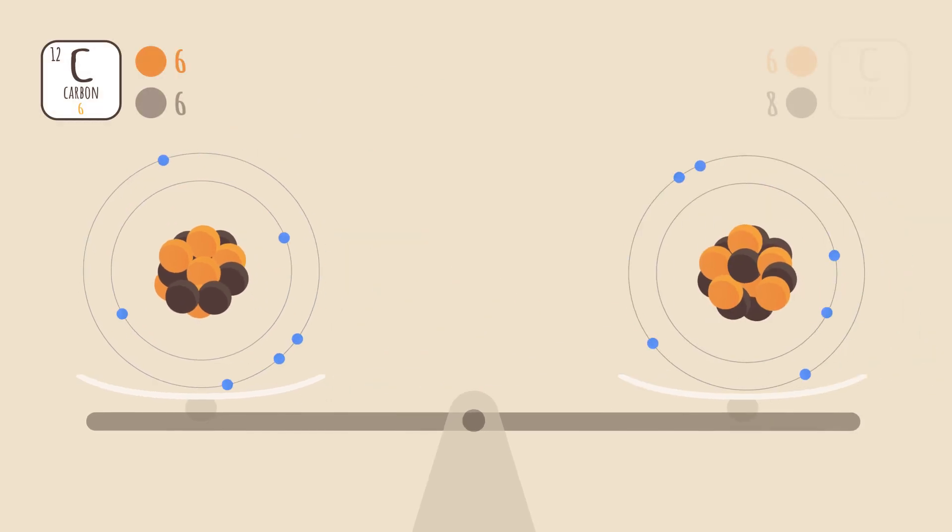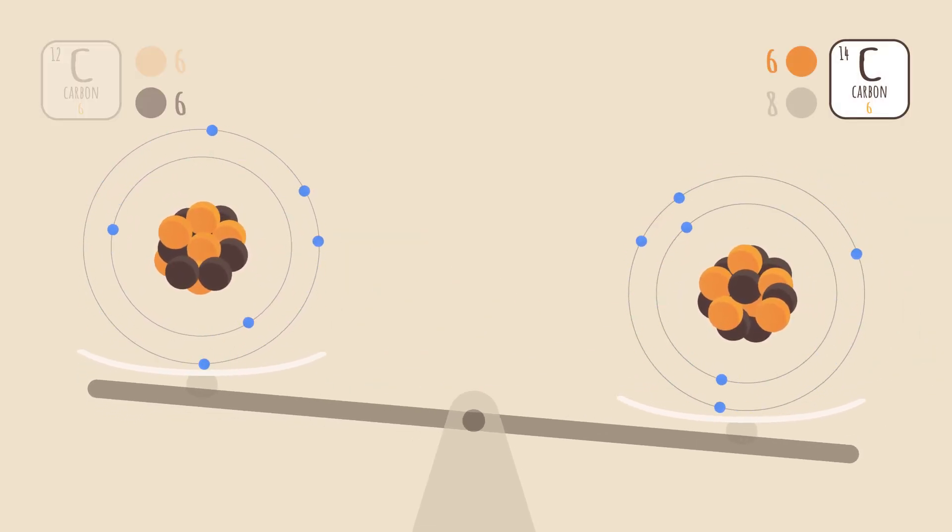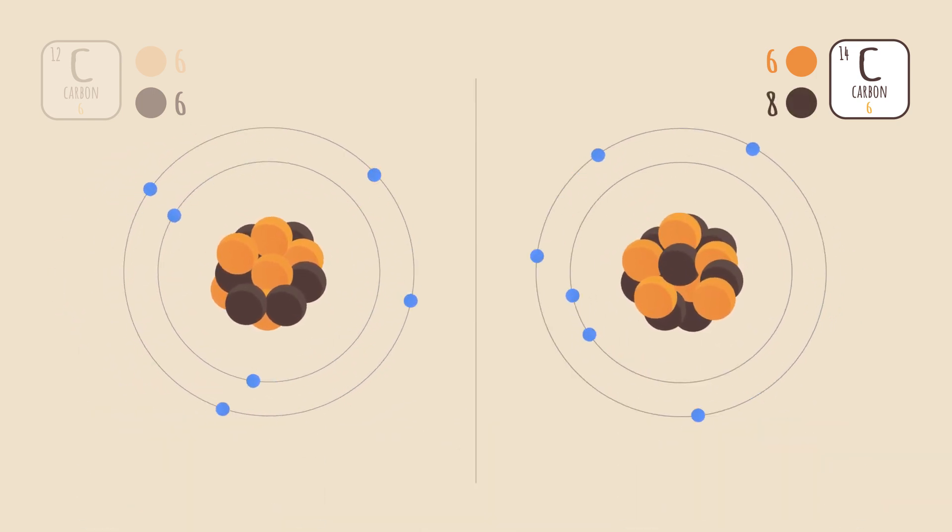The atom of carbon-12 contains six neutrons, while the heavier atom carbon-14 contains eight neutrons. These two variants of carbon are called isotopes. They are found in different abundances in nature, with carbon-12 making up over 99% of all carbon on Earth.